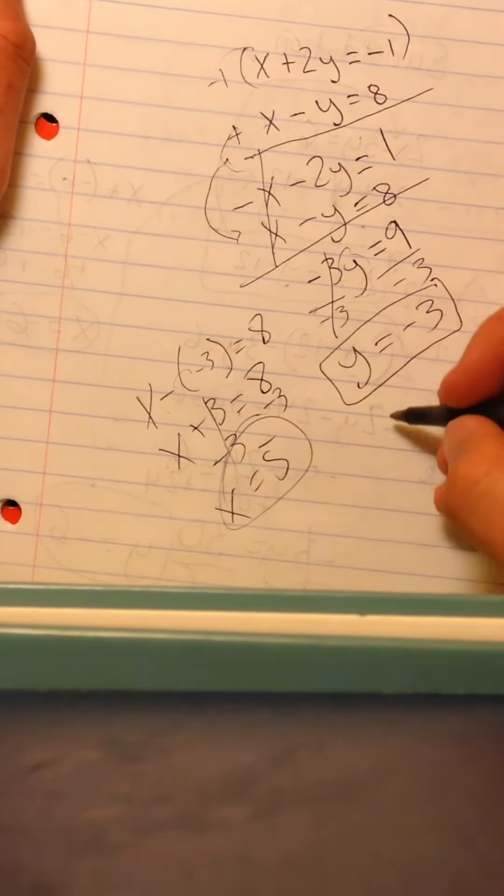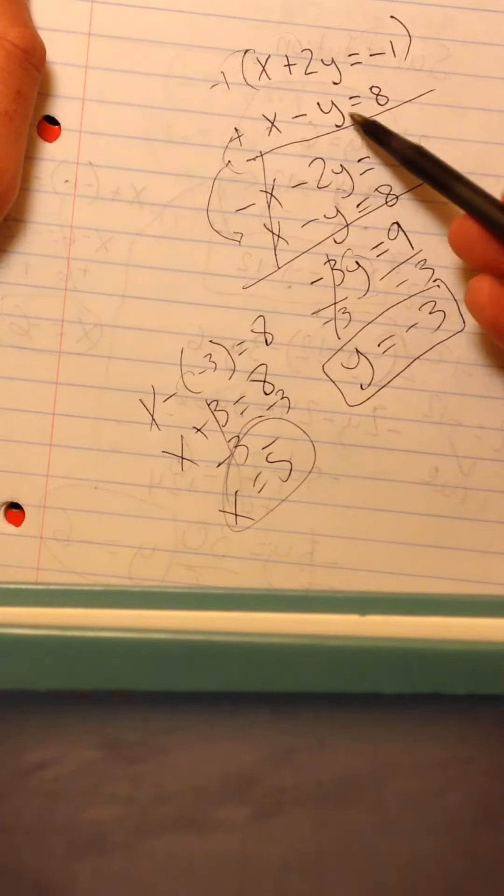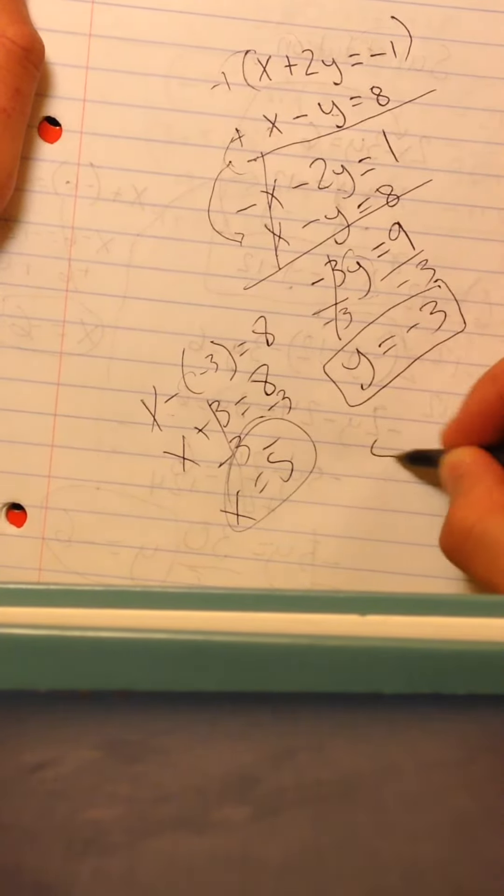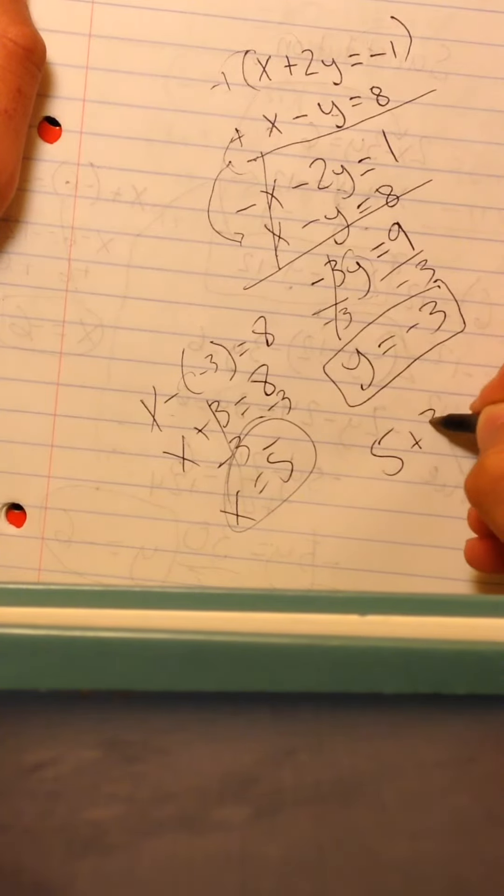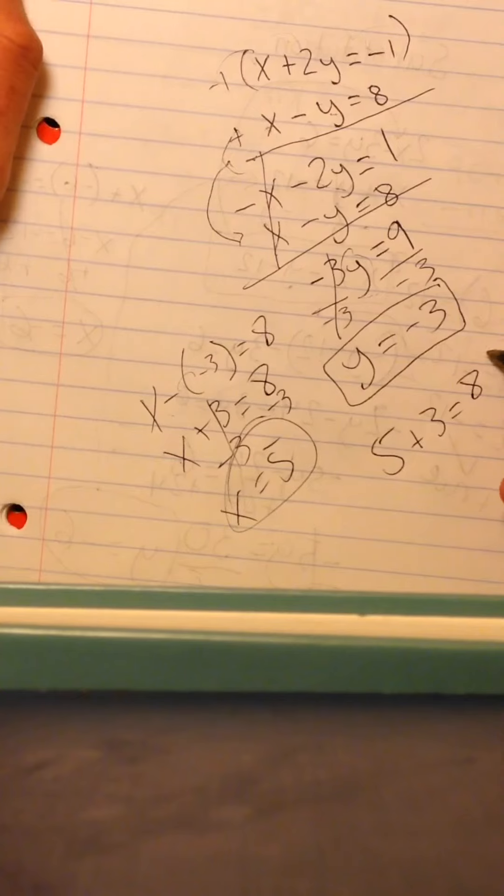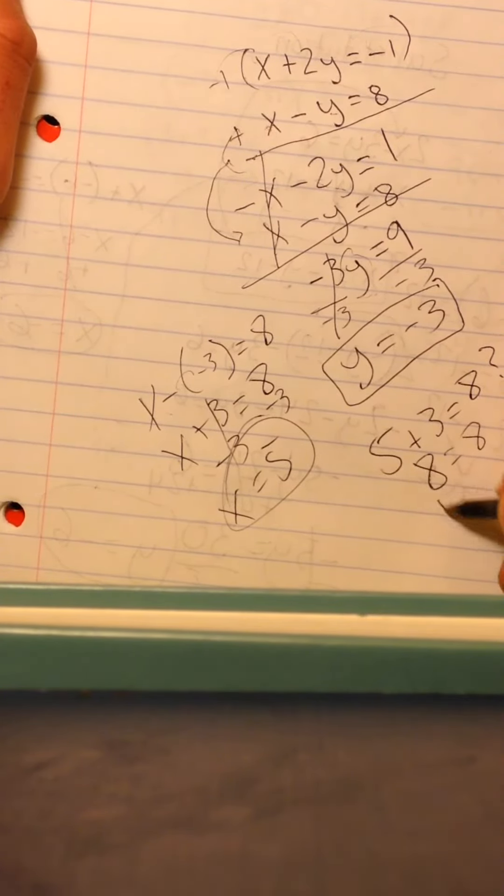Now, to check that our answers are true, we're just going to put 5 in place of x here, and negative 3 in place of y here. So, it's going to be 5 minus negative 3, which is plus 3, is equal to 8. Is that true? 8 is equal to 8? Yes, that is correct.